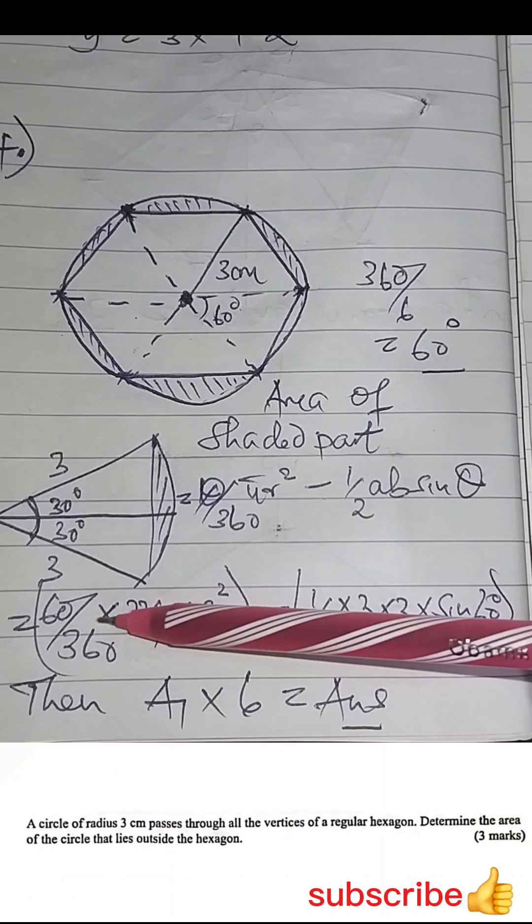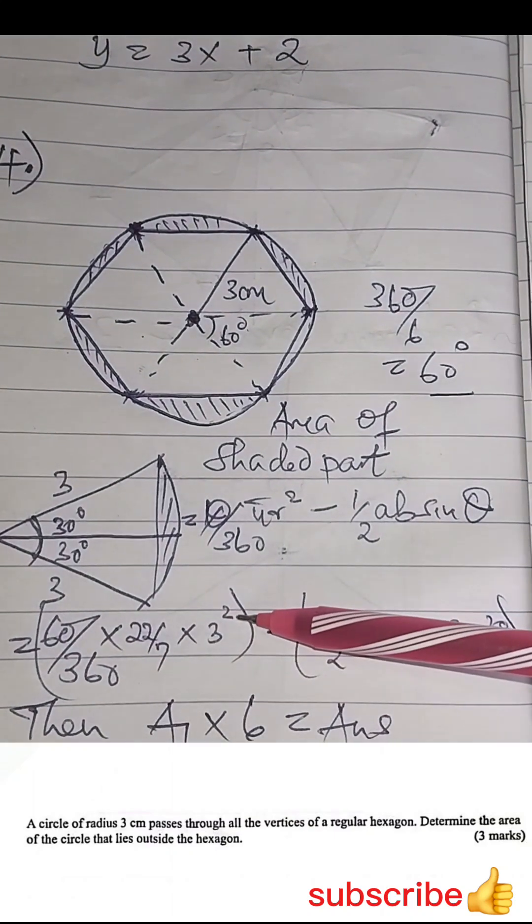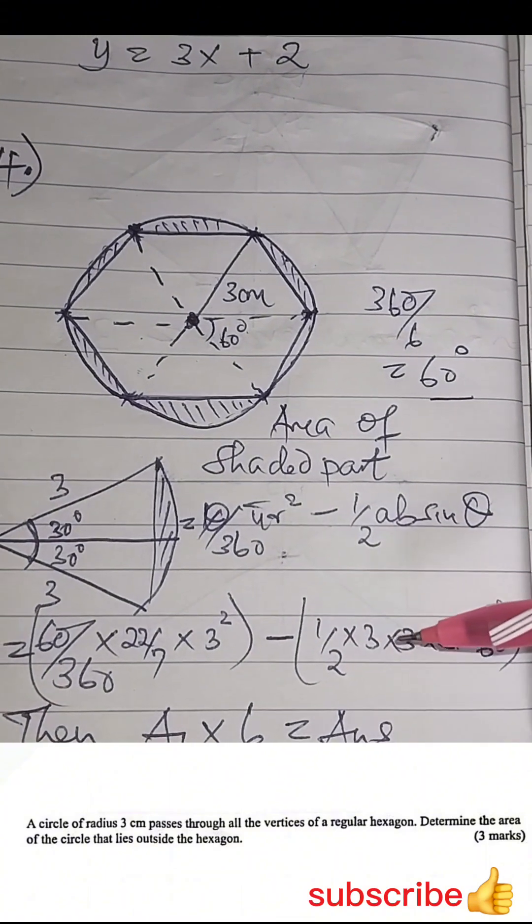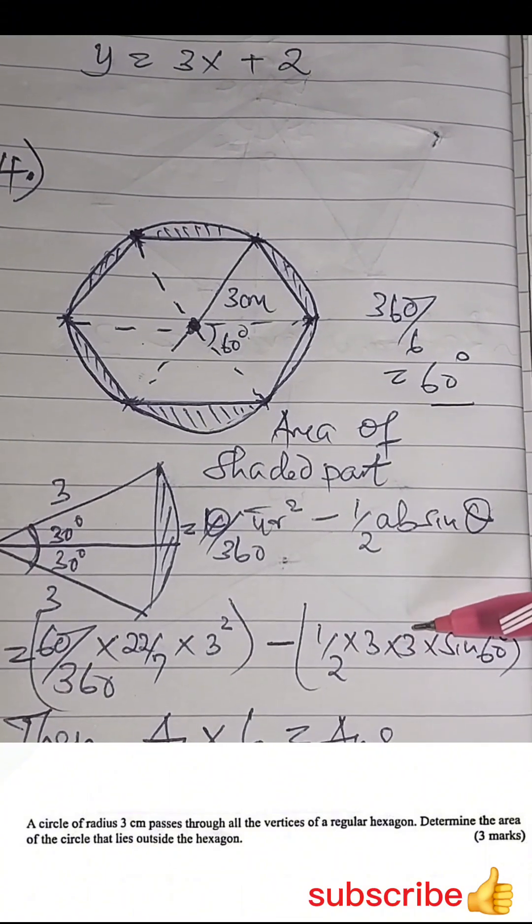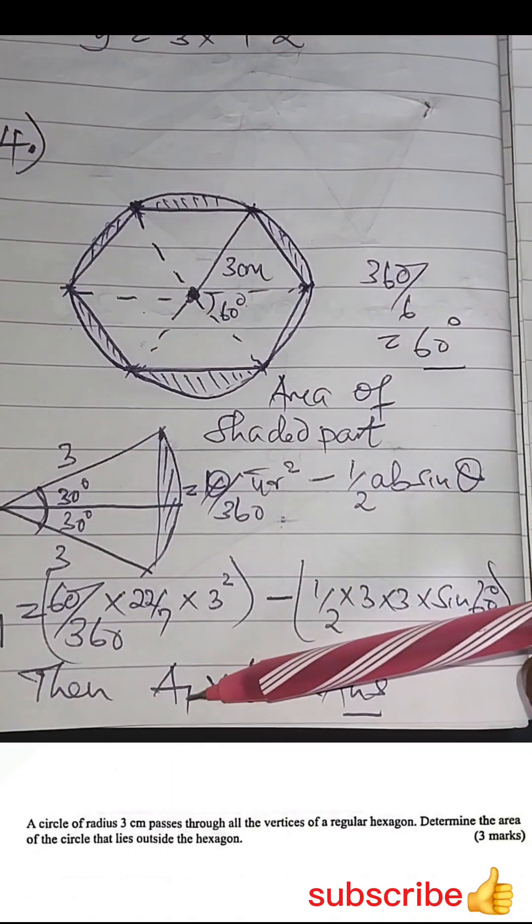You'll have theta over 360, pi r squared, the radius is three, then subtract a half, a and b, we have three, then sine 60. Then the answer that you get,